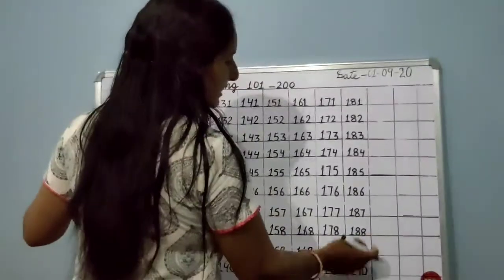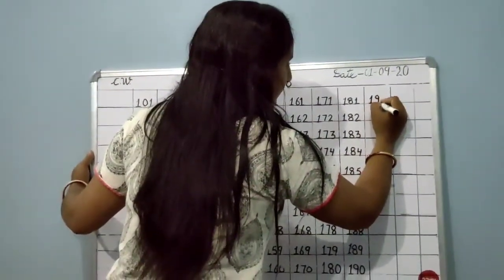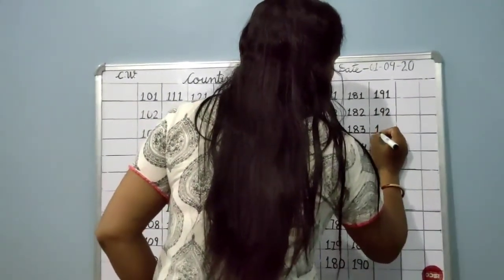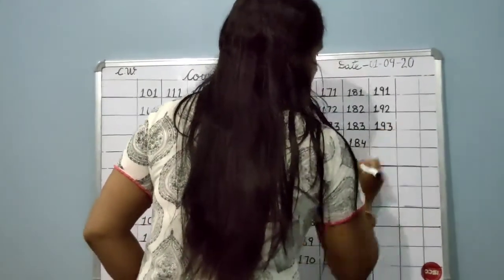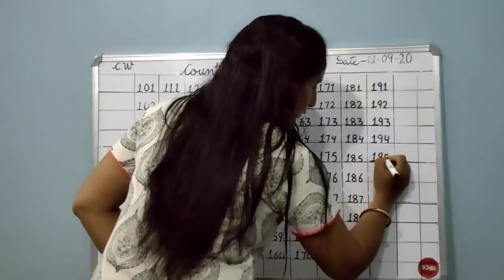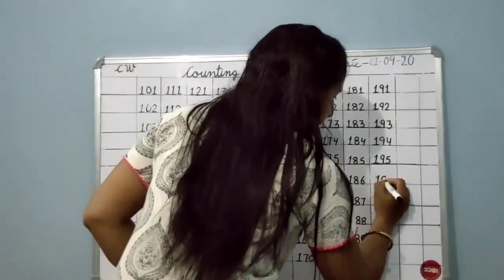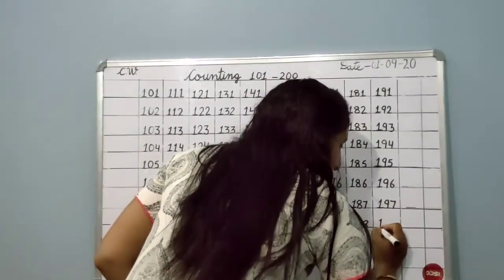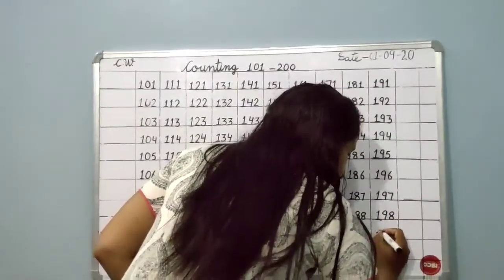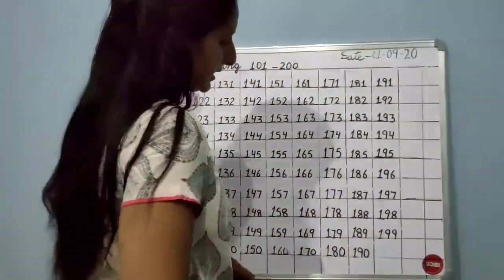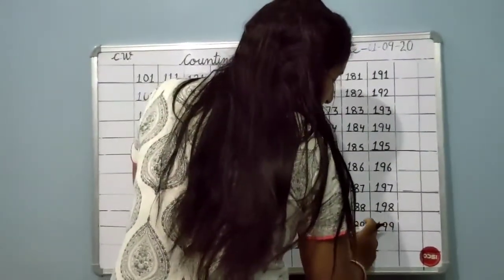And now after 190: 191. Last line — 192, 193, 194, 195, 196, 197, 198, 199. Now last number. After 199 we will write 200. There are 100 numbers here — after 99 comes 100, and 100 plus 100 is 200.